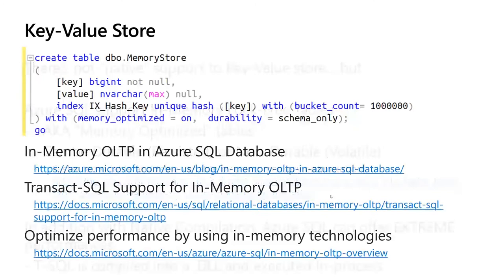This is how you create a memory-optimized table — nothing different from a usual table. You specify MEMORY_OPTIMIZED = ON and the durability: SCHEMA_ONLY means volatile, SCHEMA_AND_DATA means durable. If you need very fast tables to store data — for temporary processing or persistent processing — look at memory-optimized tables because they can really make a huge difference.